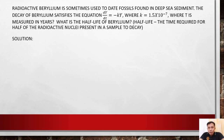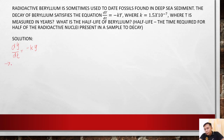Half-life is the time required for half of the radioactive nuclei present in a sample to decay. Given the equation, we have dy over dt equal to negative ky. We group like terms, so we get dy over y equals negative k dt.